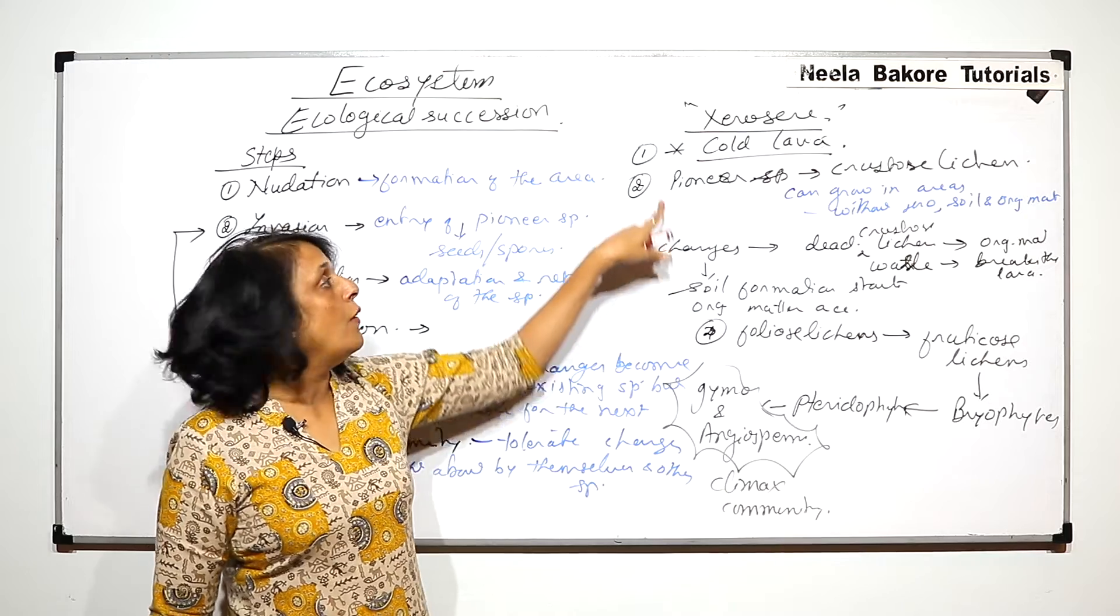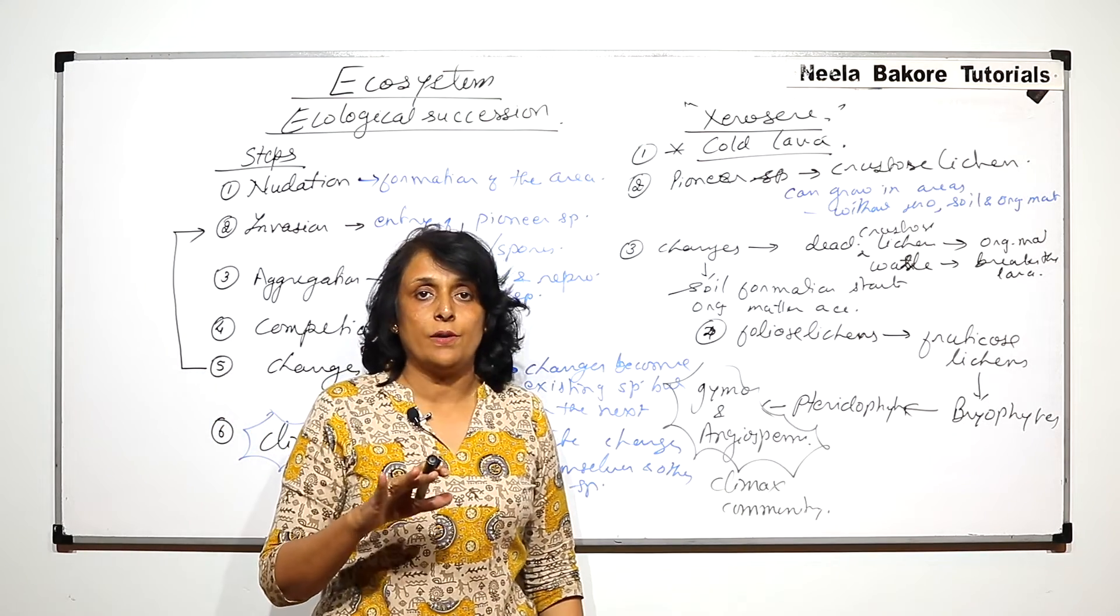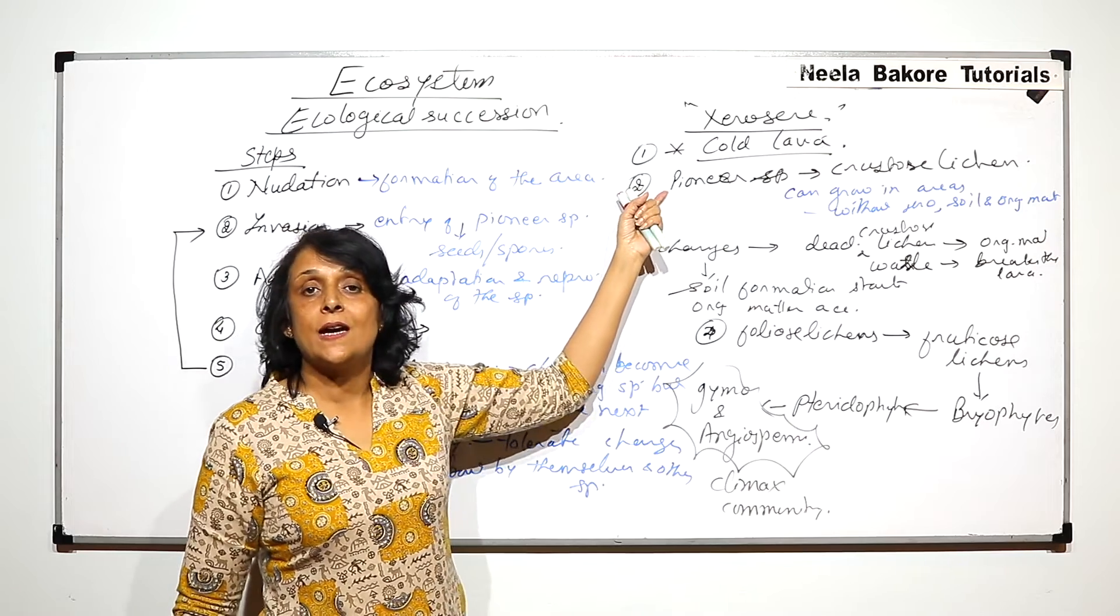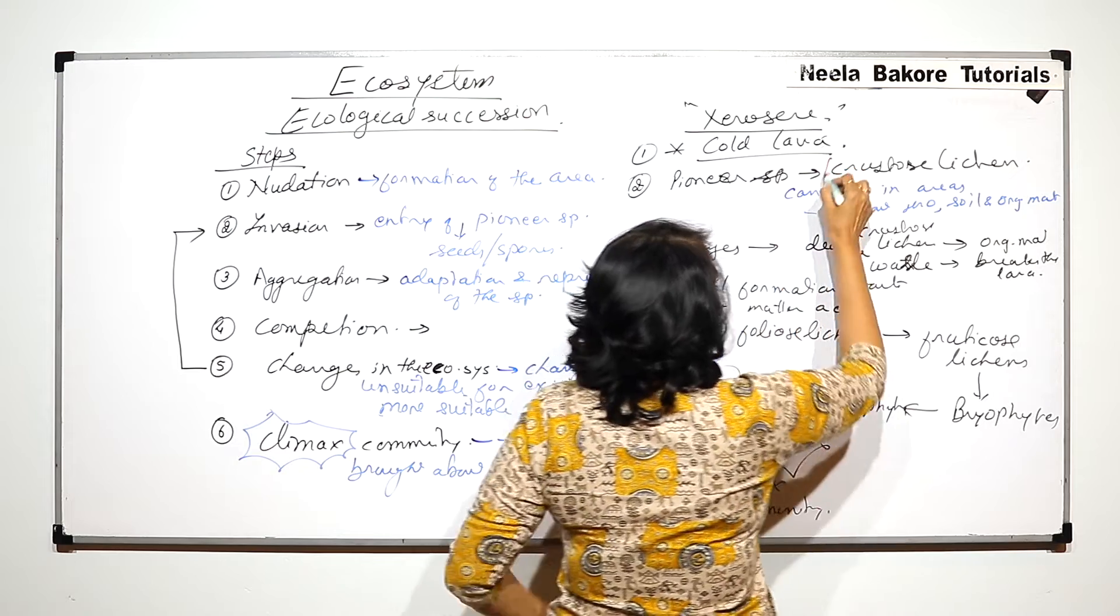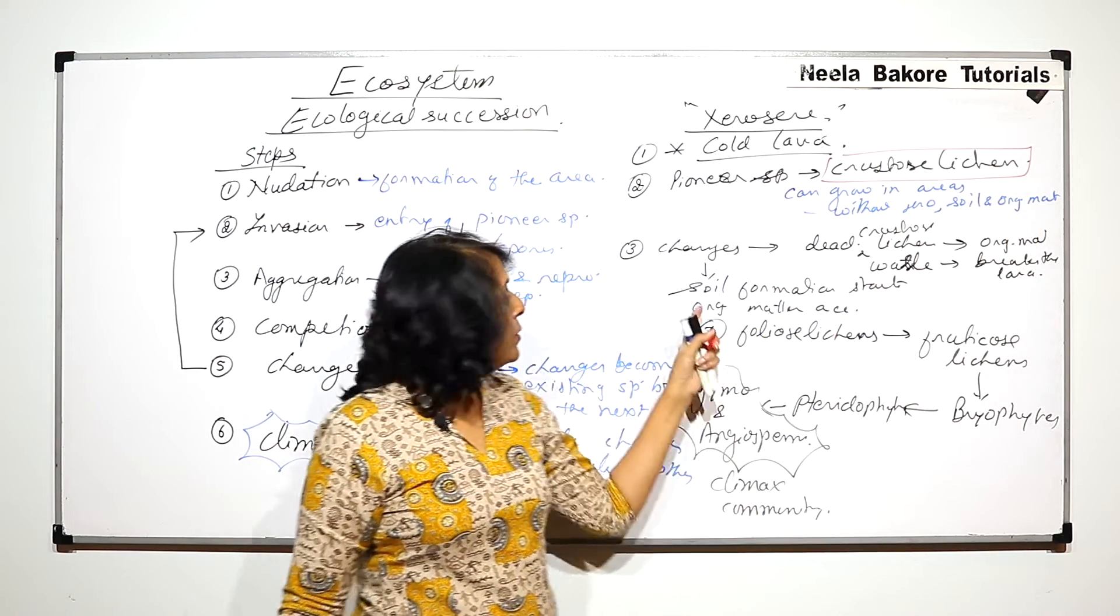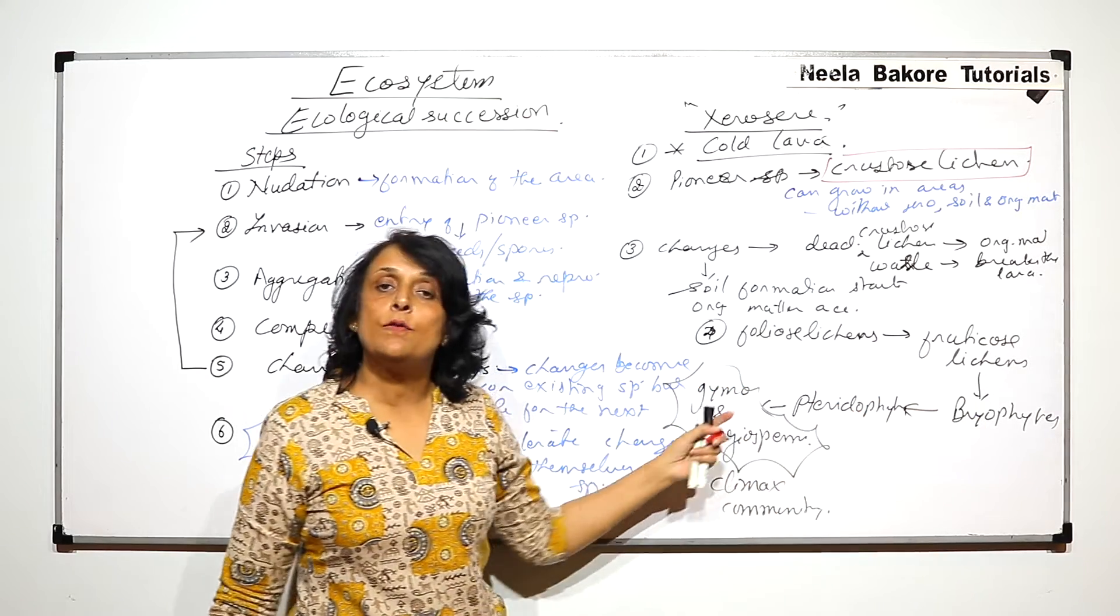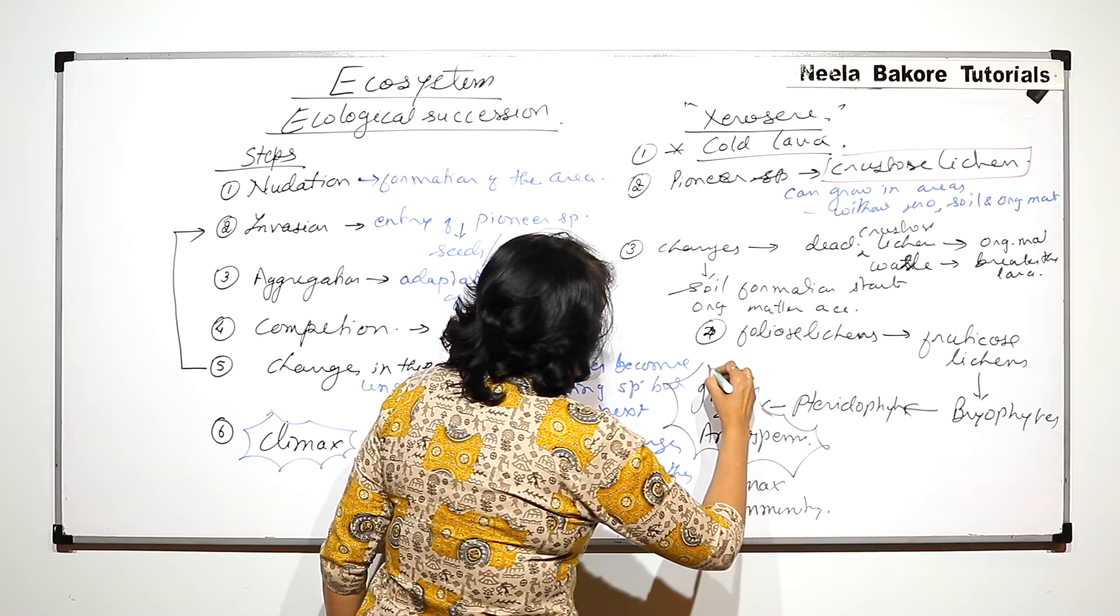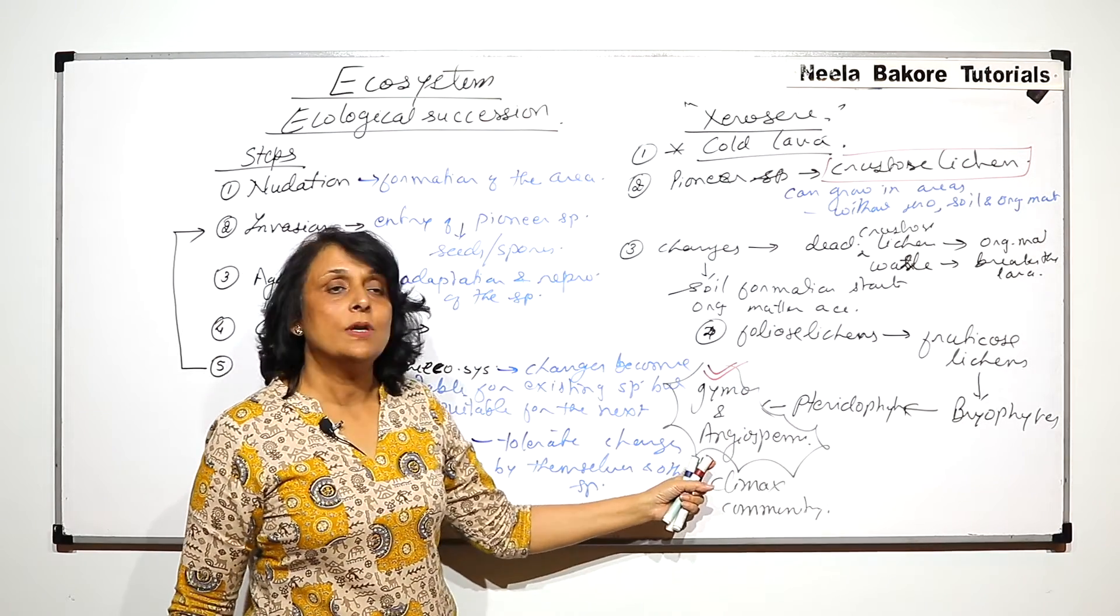In case of a xerosere, that means where there is nothing, no water, if succession starts here then the pioneer community is crustose lichen followed by foliose lichens, then fruticose, then bryophytes, pteridophytes and gymnosperms and angiosperms. These are the climax communities.